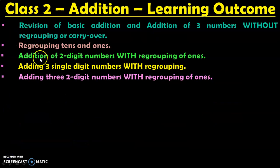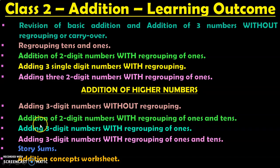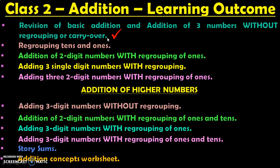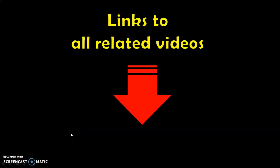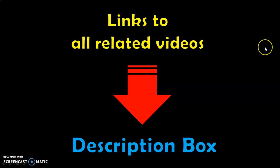Dear viewers, these are all the learning outcomes in class 2 under the topic of addition, which is one of the mathematical operations on numbers. Under addition of higher numbers, we have completed revision of basic addition and addition of 3 numbers without regrouping or carryover in our previous video. The link is given in the description box and the I-card section. In this video, we have covered regrouping Tens and Ones. All relevant topic links will be given in the description box and the in-screen video will take you to the full playlist.